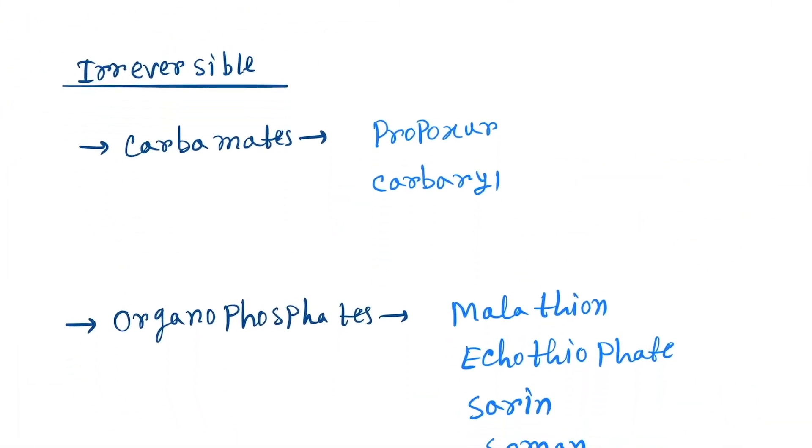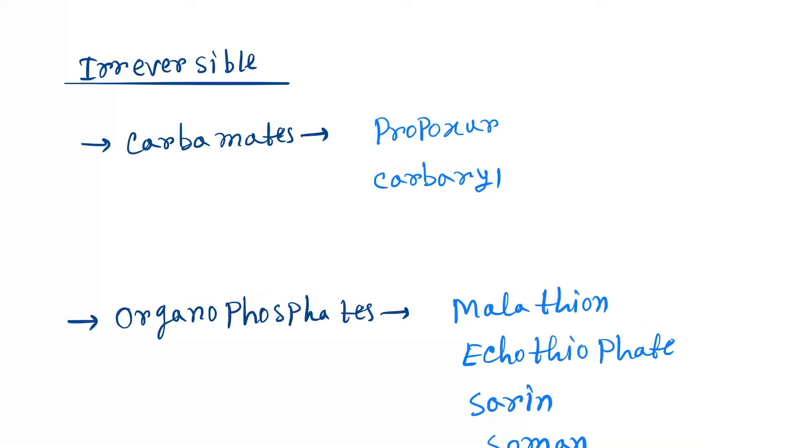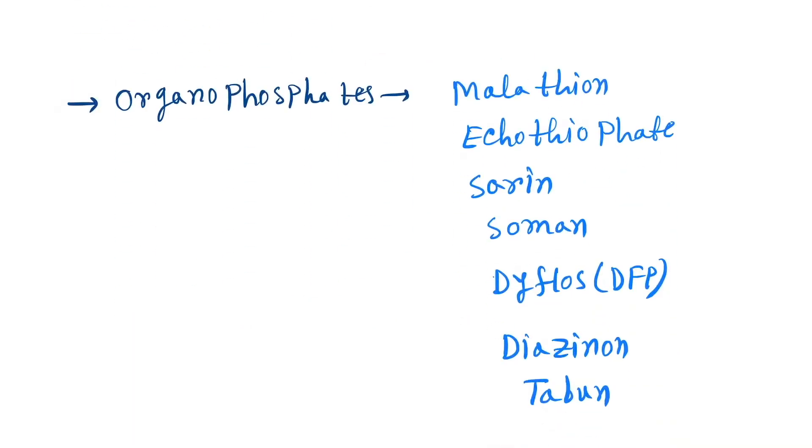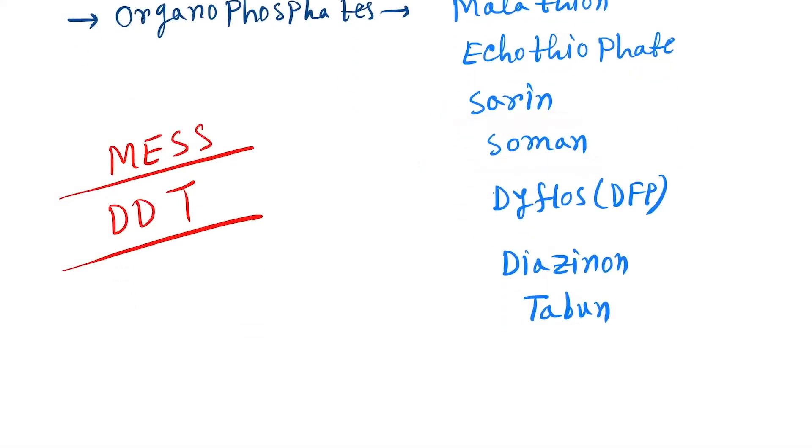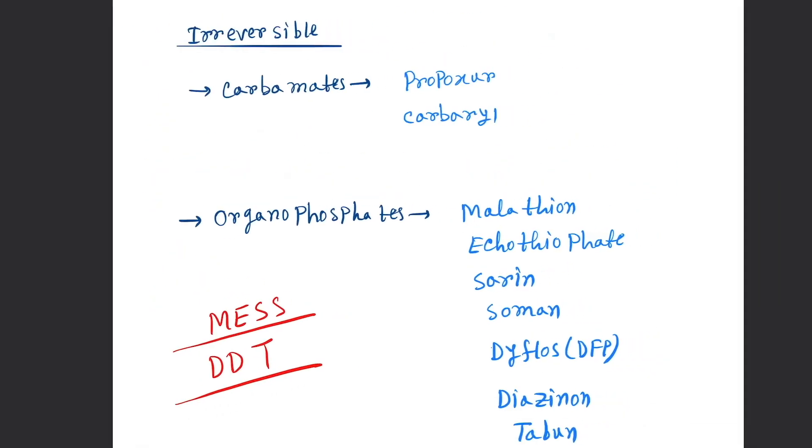Next is irreversible carbamates: Propoxur and Carbaryl. Next is organophosphates. Here you remember MASE DDT: M for Malathion, E for Ecothiophate, S for Sarin, S for Soman, D for DFP, D for Diazinon, and T for Tabun.